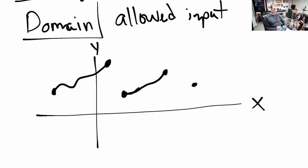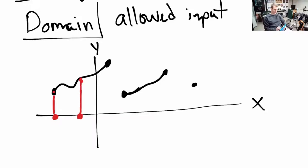We're going to go from point to point on this graph and just drop an imaginary line down to the input that created that point. So this point here, we drop a straight line down, and we know that that x input created that point above it. And we do this for every single point on the graph — that point comes from that input there, this point comes from this input here. We just keep doing this over and over again.